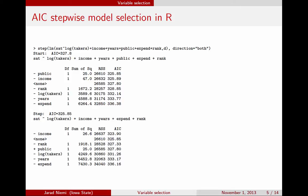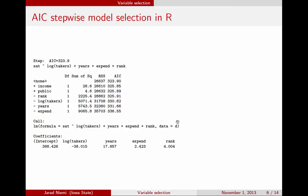In the next step, the best option is to remove income, so income is removed. Then the procedure considers putting income or public back in, or removing rank, log takers, years, or expenditure. None of these improve the AIC, so the procedure stops. The final model includes log of takers, years, expenditure, and rank. That's an example of doing this variable selection in R.